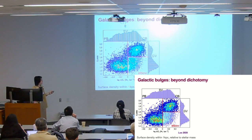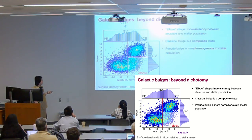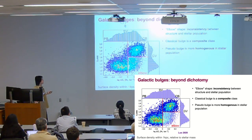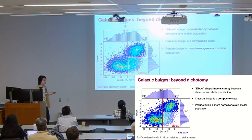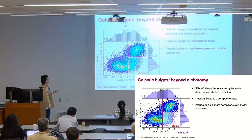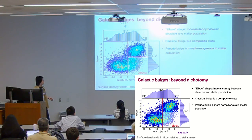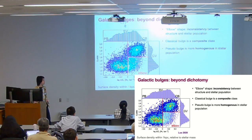In this figure, we define galaxies on the left to be pseudobulges and galaxies on the right to be classical bulges. Classical bulges are composite in their stellar population — they cover a wide range of star formation — while pseudobulges are more homogeneous in their stellar population. This elbow shape in stellar population versus structure reveals an inconsistency between bulge structure and bulge stellar population. So we naturally ask: what about kinematics? Kinematics is tightly related to galaxy mass distribution and is related to multiple physical processes including gas inflow, mergers, and feedback.